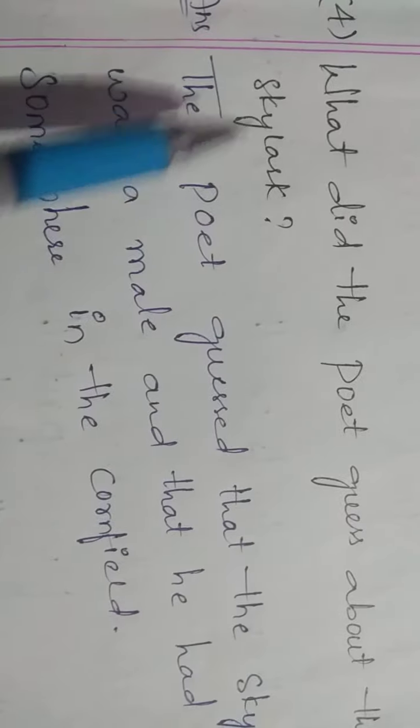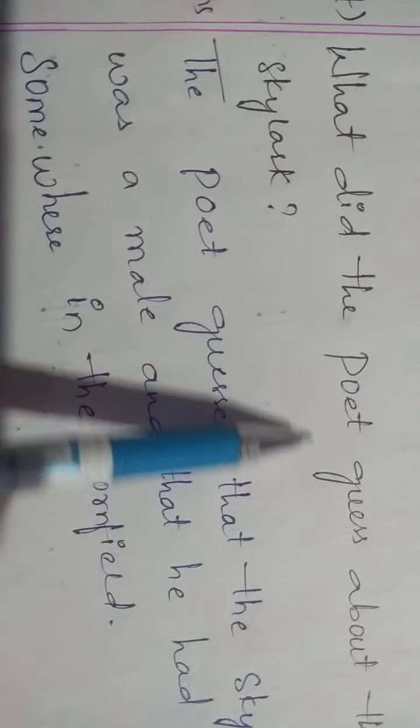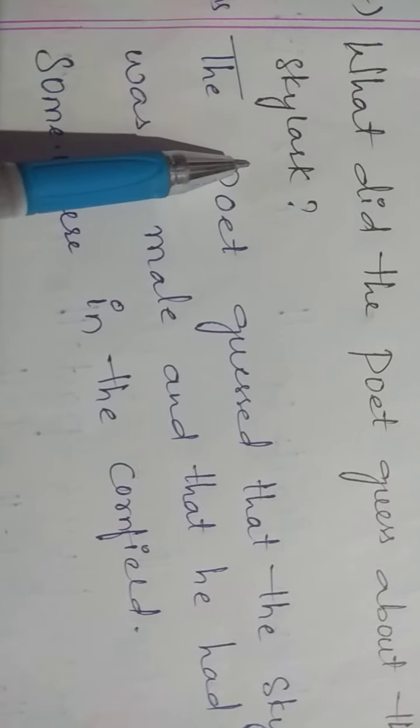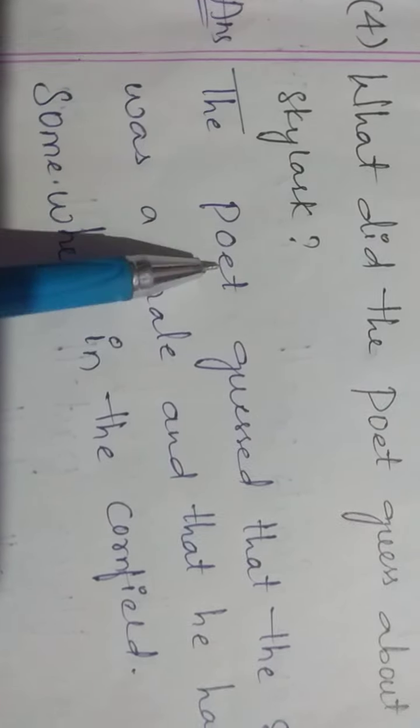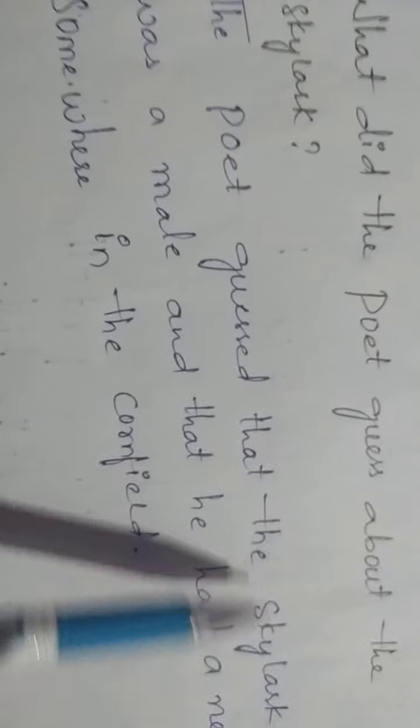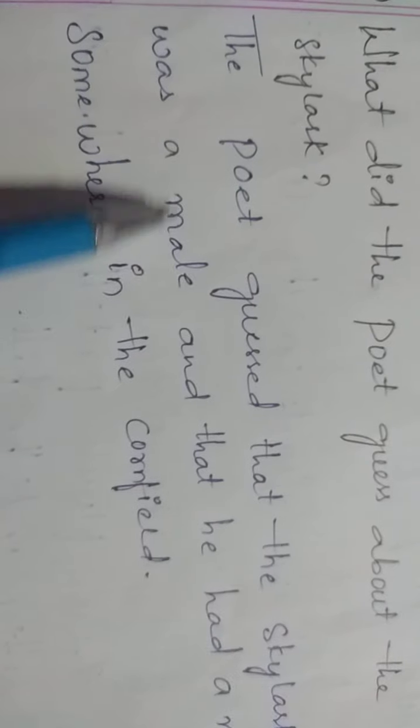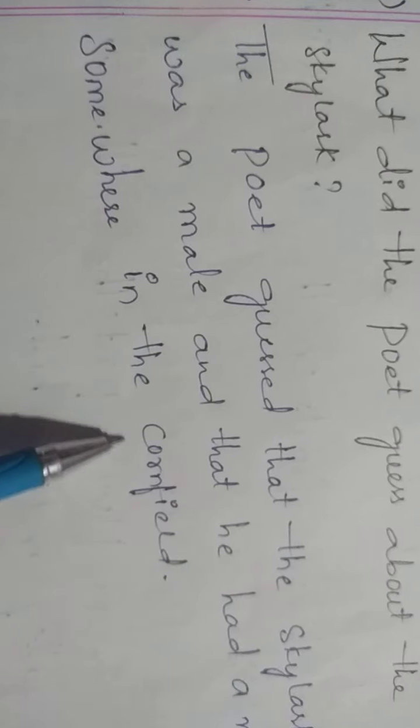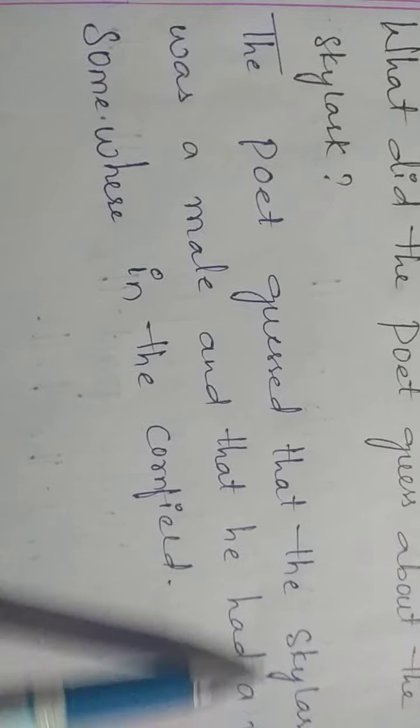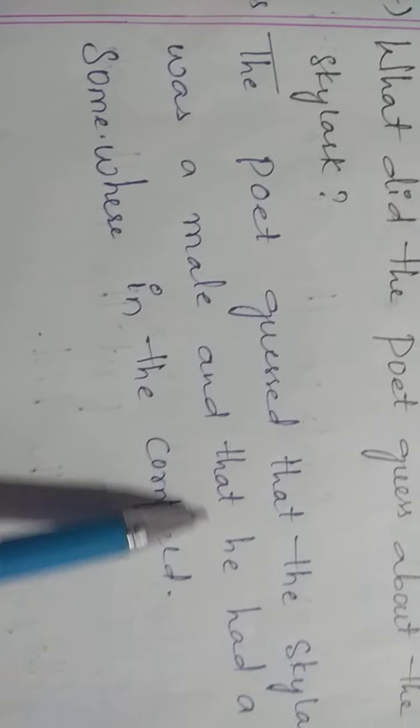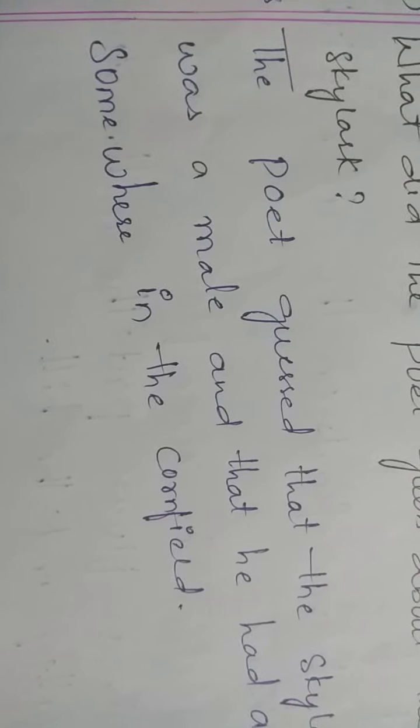Next, fourth question. What did the poet guess about the skylark? Now see the answer. The poet guessed that the skylark was a male and that he had a nest somewhere in the cornfield. This is the fourth answer.